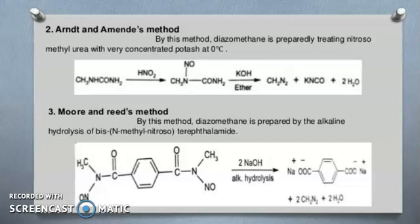Now Moore and Nears method. By this method, diazomethane is prepared by the alkaline hydrolysis of N-methyl nitroso-tethylamide. You can see these reactions and formation of diazomethane.